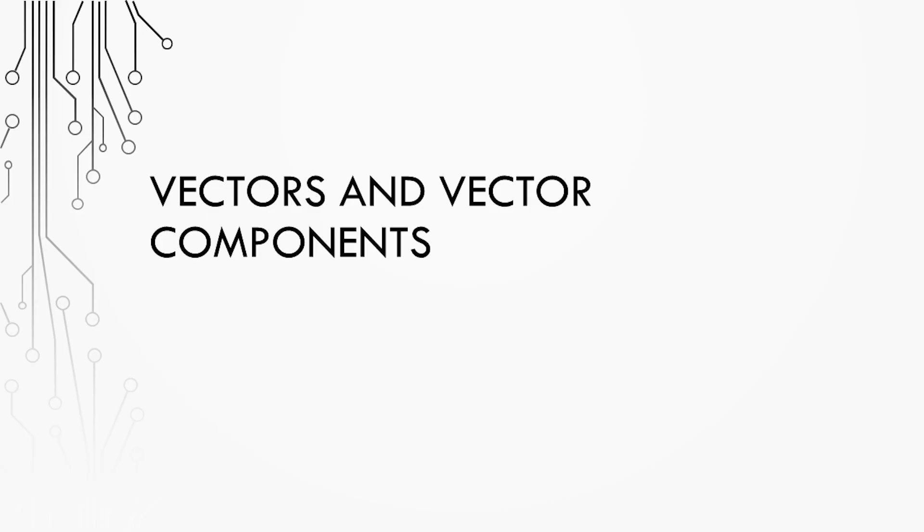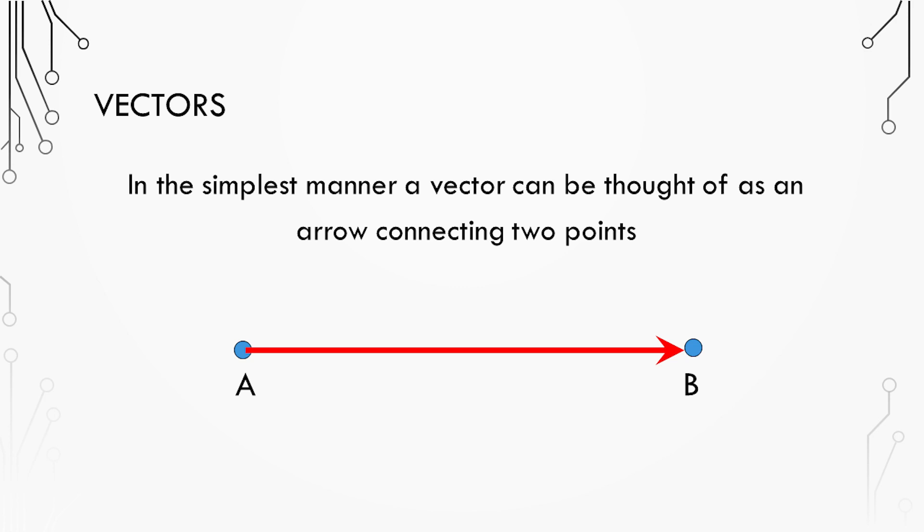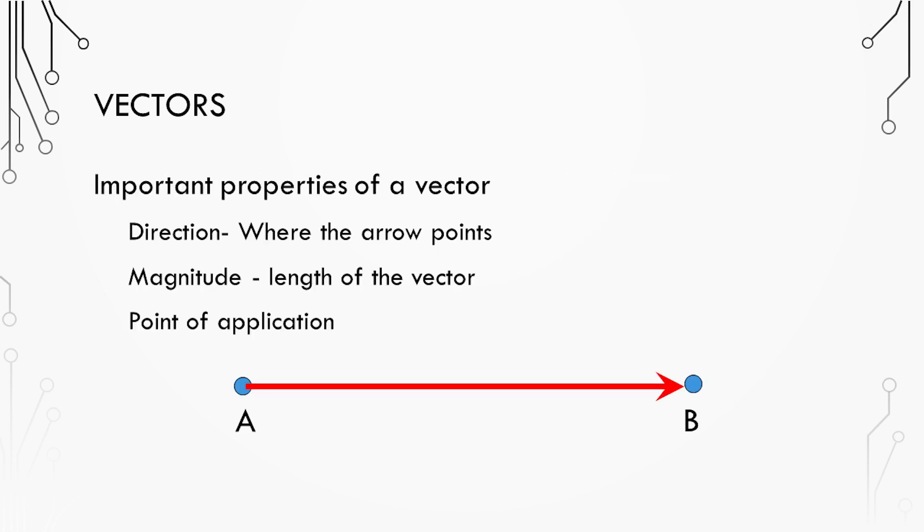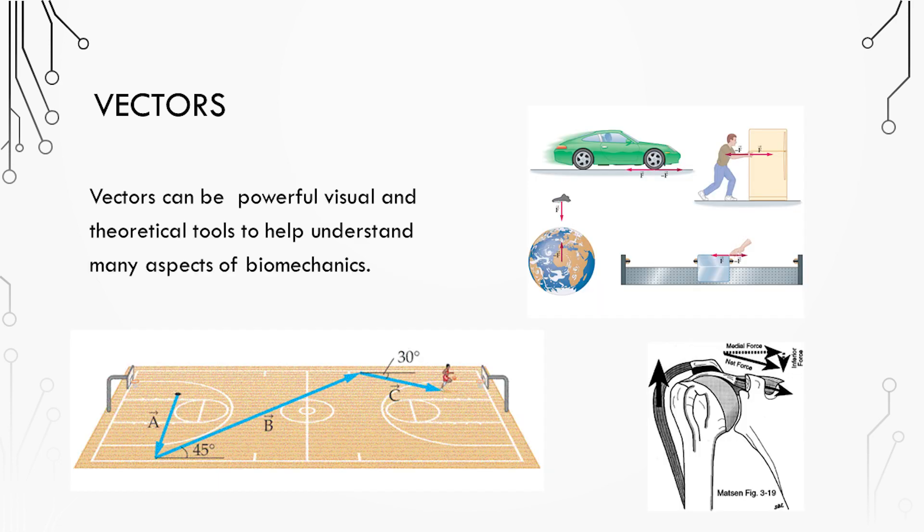Next let's take a look at vectors and vector components. A vector can be thought of as an arrow connecting two points. There are three important properties of a vector. The direction which is where the arrow points, the magnitude which is the length of the vector, and the point of application which is where the vector is acting on the body.